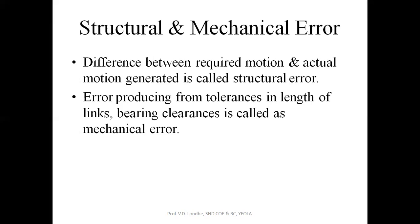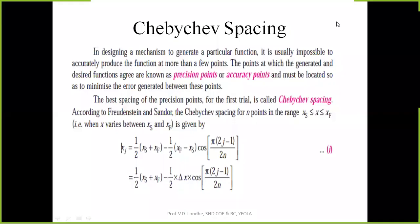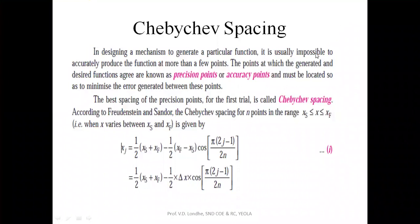Structural and mechanical errors can be found out by the analytical method known as the Chebyshev spacing method. In designing a mechanism to produce a particular function, it is basically impossible to get the accurate function, but the points at which the generated function and the desired function agree are known as the precision points or accuracy points. These must be located so as to minimize the error generated between these points.